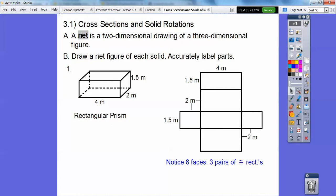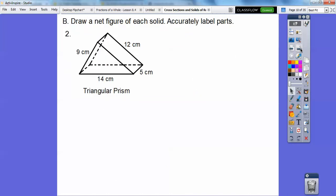Notice on rectangular prisms, it gives us six faces and they all have three pairs of congruent rectangles. Here we have a triangular prism, so we're going to have a pair of congruent triangles and then three rectangles.